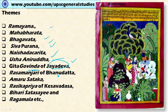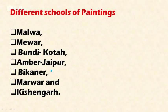Other important literary sources include Nishada Charita, Usha Aniruddha, Gita Govinda of Jayadeva, Rasamanjari of Bhanudatta, Amaru Sataka, Rasikapriya of Keshavadasa, Bihari Satasai, and Ragamala. These are not paintings themselves but literary works — poems and texts — based on which the paintings are made. Ragamala in particular is a literary work, not a painting; paintings are made based on this theme.